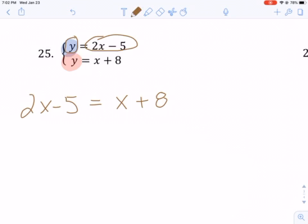Again, because what we have established here is y equals 2x minus 5 and it also equals x plus 8. So that means if they both equal y, they have to equal each other.